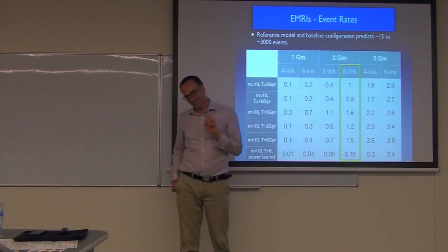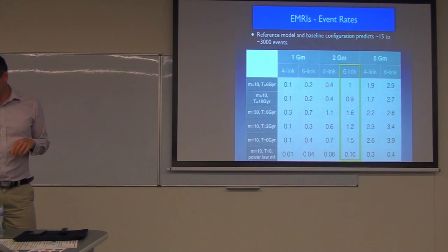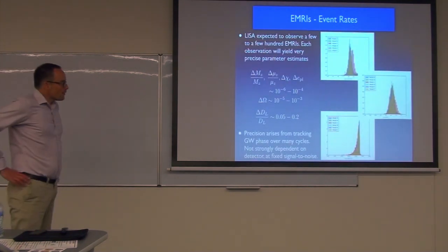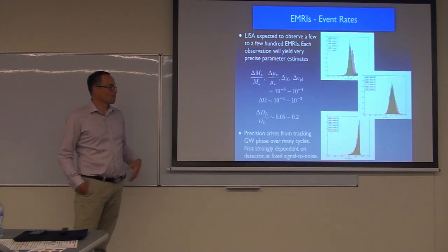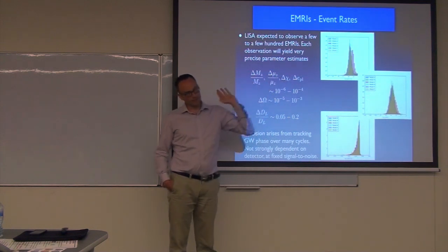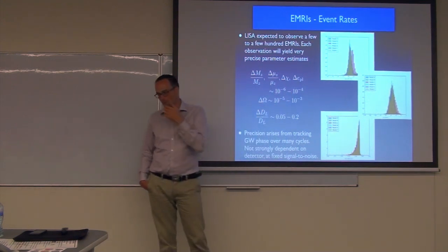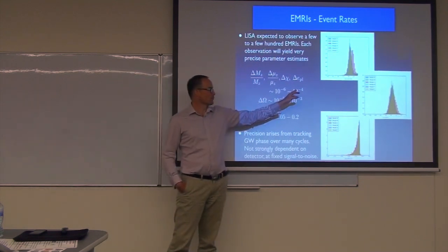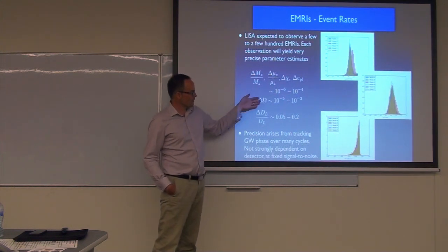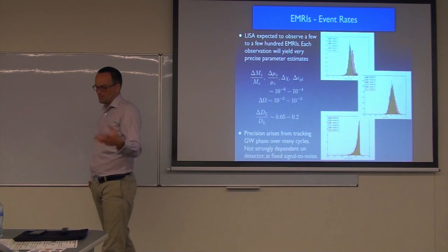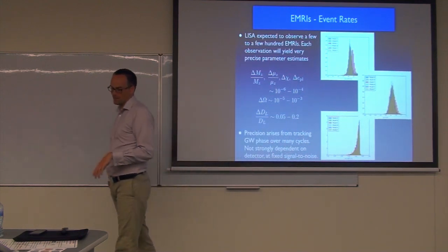The bottom line is 10 to 1,000 EMRIs - order of magnitude - with uncertainty due to the uncertain astrophysics. One promising thing is that our minimum estimate is not zero. Having so many cycles in the strong field allows us to measure parameters very precisely with EMRIs. We expect to get better measurements of masses, spins, and eccentricities with EMRIs than with massive black hole binaries. We can get down to positions as low as a part in a million for mass in the best cases, and typically 10^4. We can also get a few percent to a few tens of percent precision on distance.